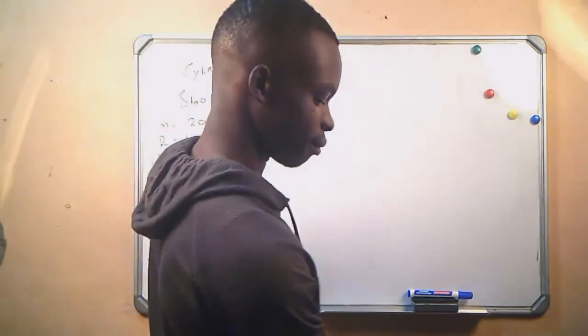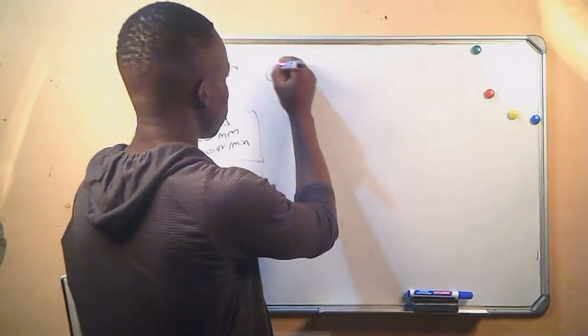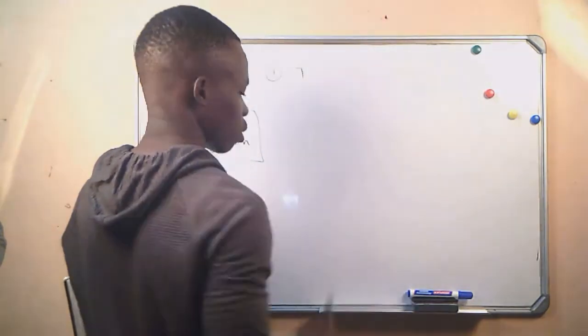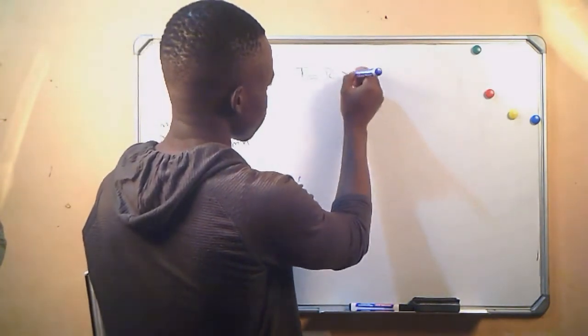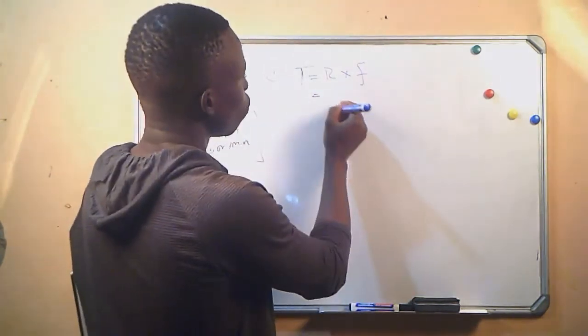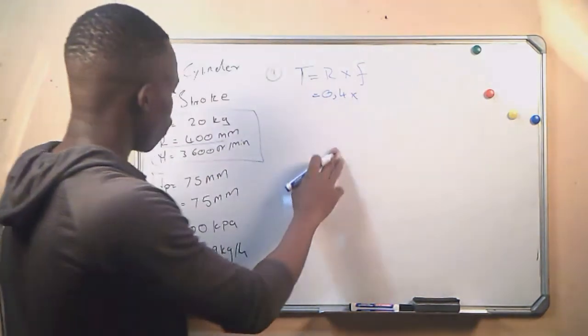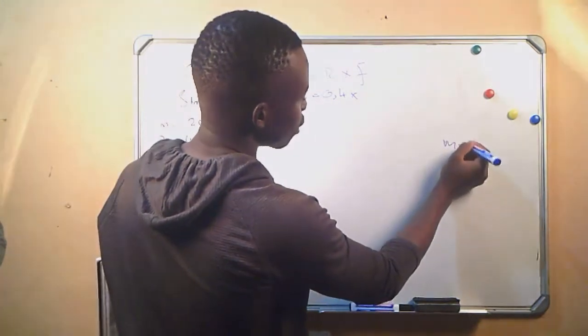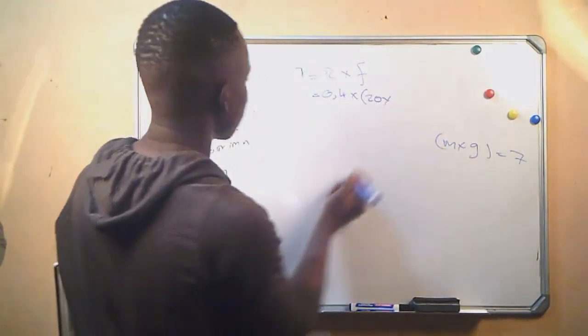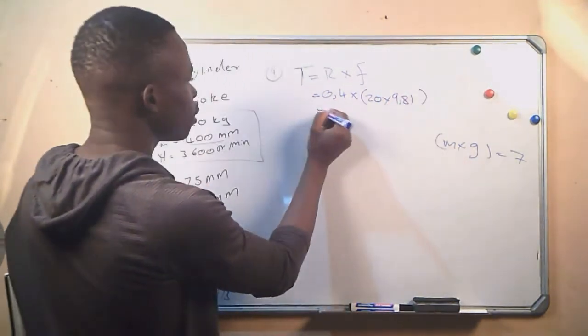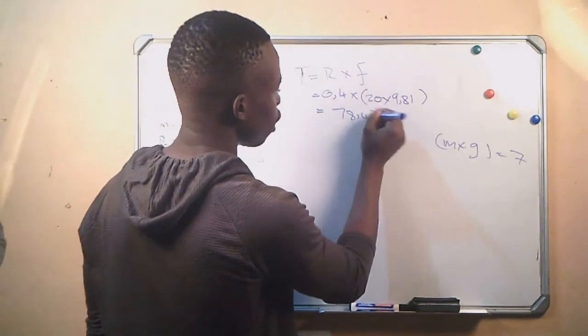Question number A, they say calculate the brake torque and brake power. We know torque is given by R times F, which is radius times force. Our radius is 0.4 meters times the force, which is the mass times gravitational acceleration. The mass is 20 kg times 9.81, and we get a torque of 78.48 Newton meters.